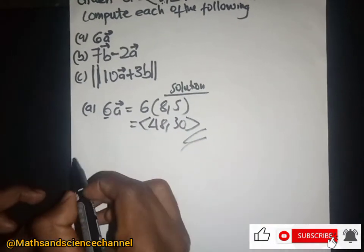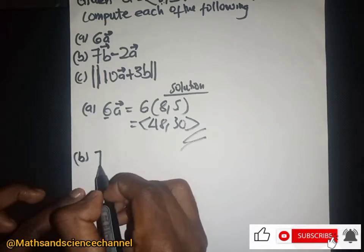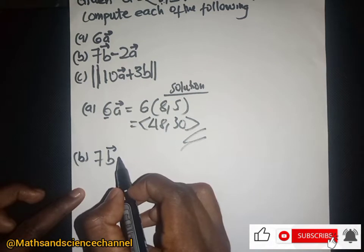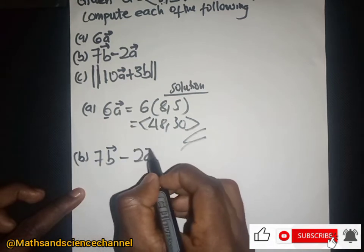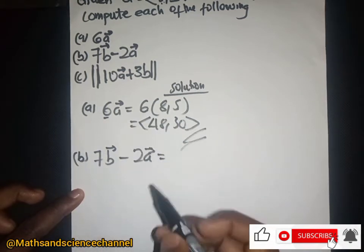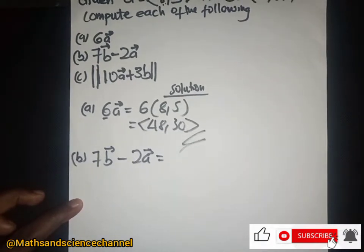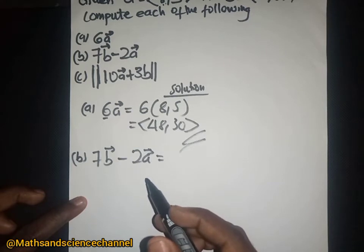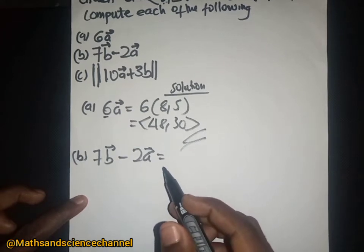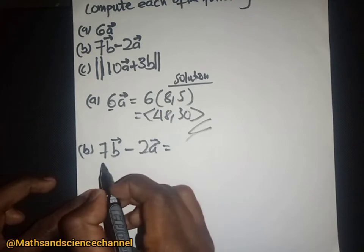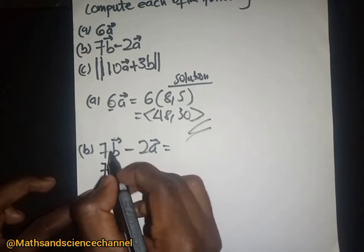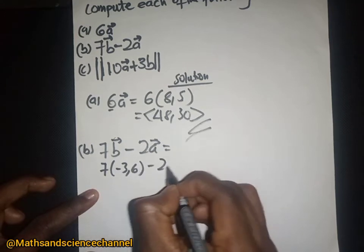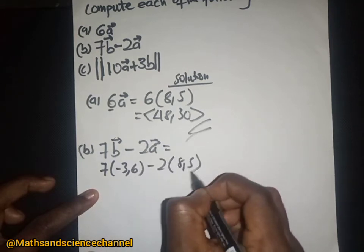For part (b), we have 7 multiplied by vector b, minus 2 multiplied by vector a. We perform scalar multiplication first, then subtract the corresponding components. So we have 7 here, with vector b equal to (-3, 6), then 2 multiplied by (8, 5).